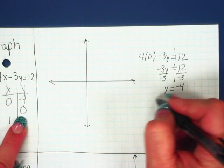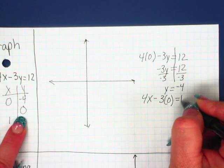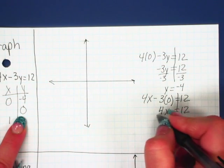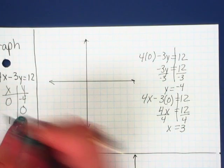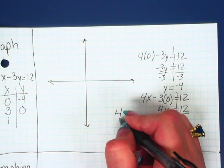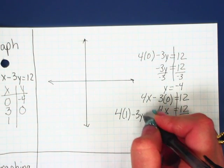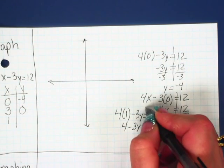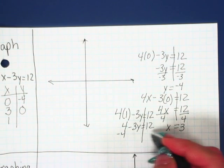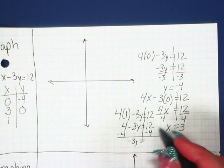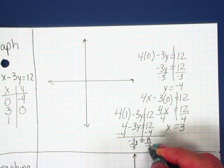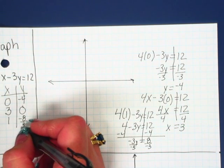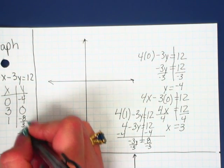What happens if y is 0? 4 times x minus 3 times 0 equals 12. You get 4x equals 12. Opposite operations. Divide by 4. X equals 3. The last one you're going to be doing is what happens if x is 1. Opposite operations. Subtract the 4 from both sides. Negative 3y equals 8 over division on both sides. So my y is negative 8 thirds. And again, in order to graph it, I would want to change that to a mixed number. Negative 2 and 2 thirds is what this is.